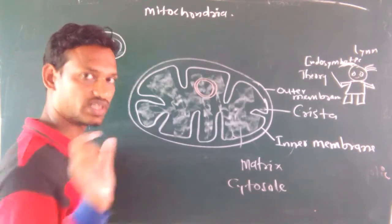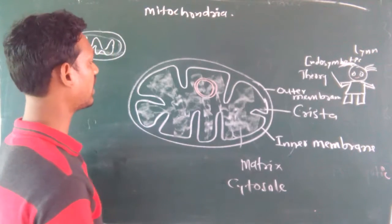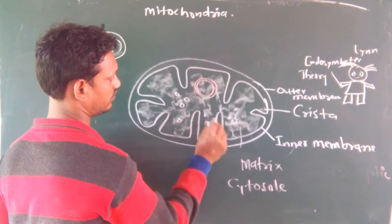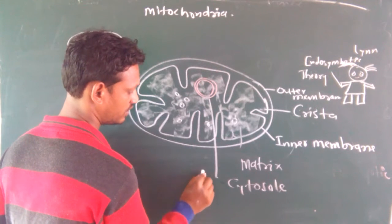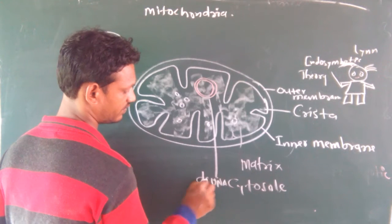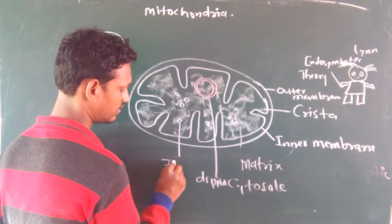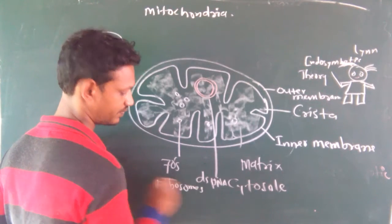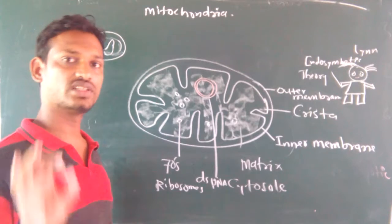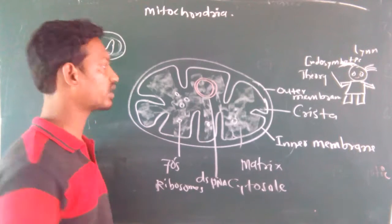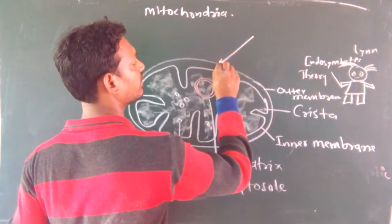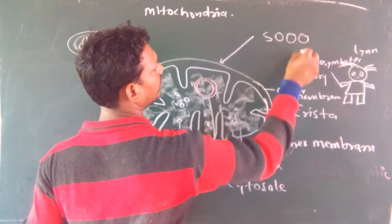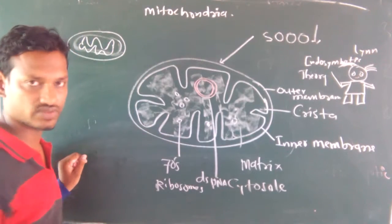It contains double stranded DNA, circular double stranded circular DNA, as well as 70S ribosome. One more special thing about the membrane of mitochondria: the outer membrane is permeable to those particles whose molecular weight is below 5000 daltons.